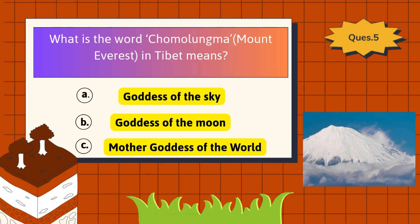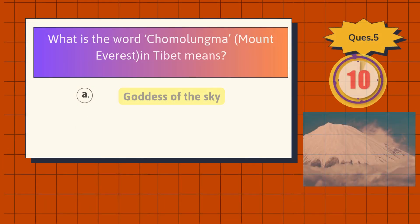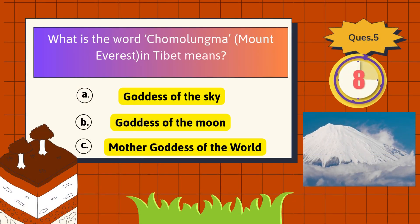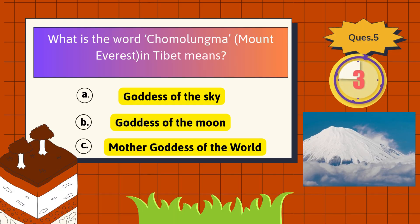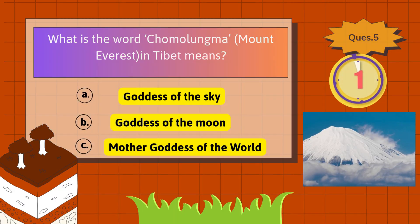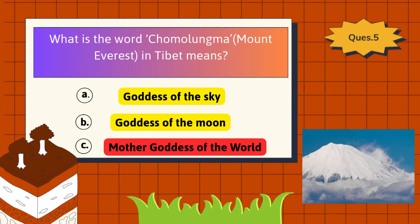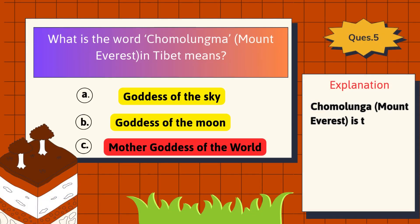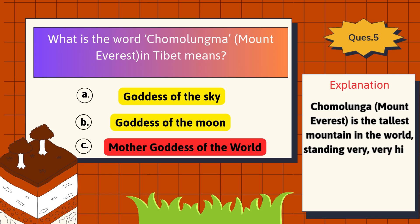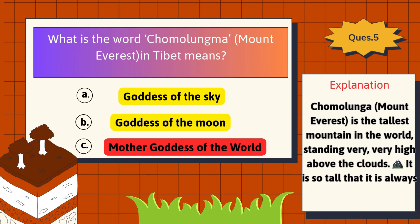What does the word Chomolungma in Tibet mean? The correct answer is Mother Goddess of the World. Chomolungma is the tallest mountain in the world, standing very, very high above the clouds. It is a snow-capped mountain — so tall that it is always covered with snow, and people climb it with special gear because it is very cold and hard to breathe at the top.